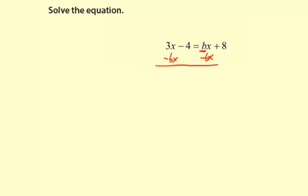You could also subtract 3x if you wanted to. So 3x minus bx, then minus 4, equals plus 8. This bx is gone now that we subtracted it.